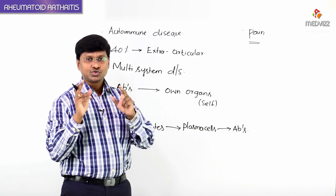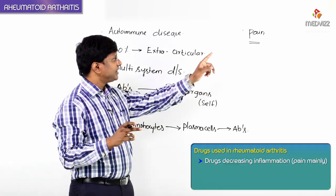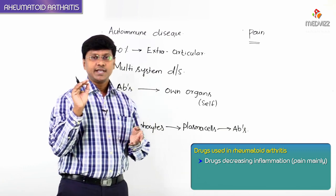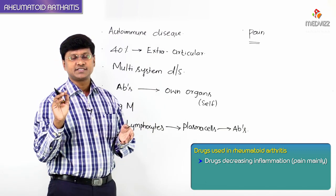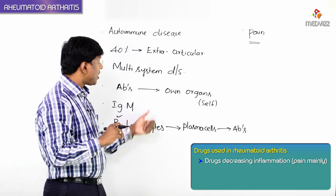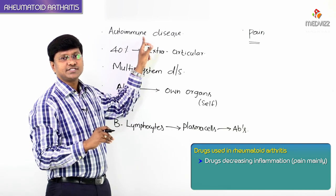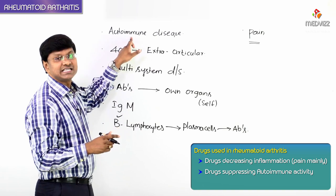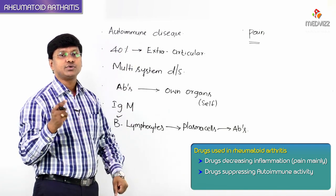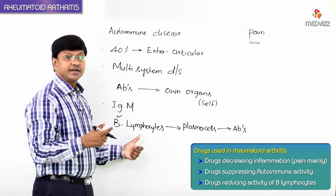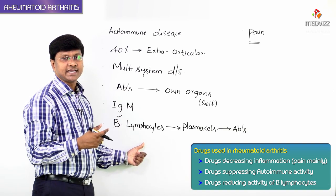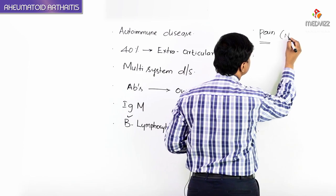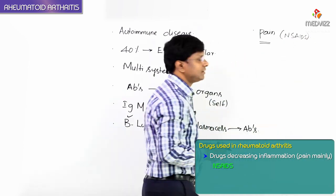To reduce the pain, we require a group of drugs. The basic pathophysiological mechanism is the autoimmune mechanism, so we need drugs that will suppress the autoimmune activity or reduce the activity of B lymphocytes. For reducing pain, we mainly use non-steroidal anti-inflammatory drugs (NSAIDs).